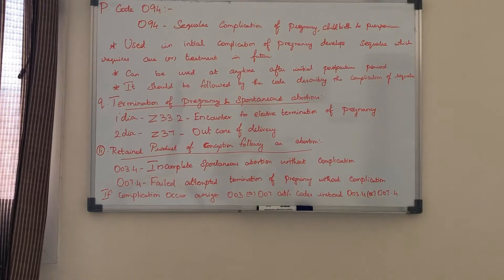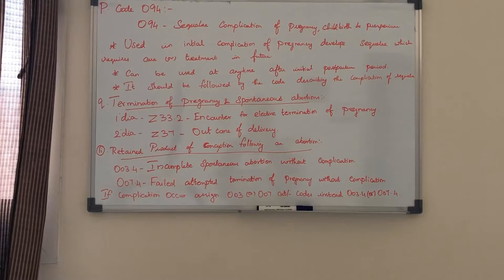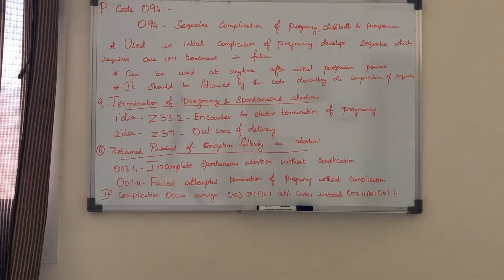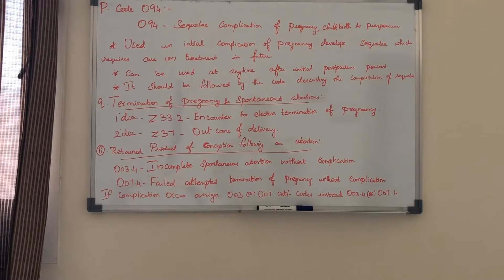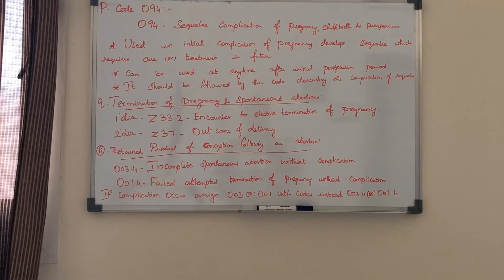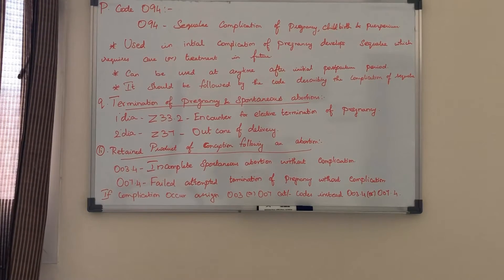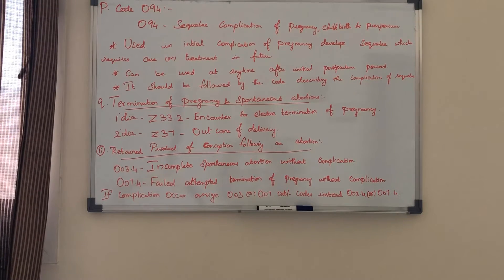The next topic is termination of pregnancy and spontaneous abortion. The principal diagnosis is Z33.2, encounter for elective termination of pregnancy, and the secondary diagnosis is Z37, outcome of delivery. For retained products of conception following an abortion, assign O03.4 for incomplete spontaneous abortion without complication, or O07.4 for failed attempted termination of pregnancy without complication. If a complication occurs during incomplete spontaneous abortion or termination, assign codes from category O03 and O07.4 instead.